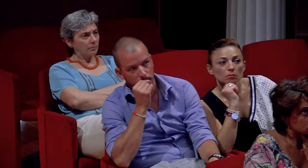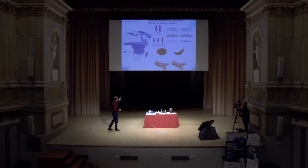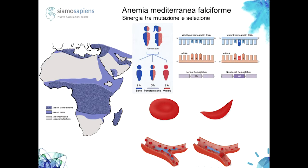Se un parassita entra nel globulo rosso e vuole replicarsi, la prima cosa che deve fare è mangiare. Se sono portatore sano di anemia, ho una chance di eliminare i globuli rossi infettati. E allora capite bene perché in quella mappa africana le due corrispondenze di colore fanno vedere che dove c'è malaria c'è un'alta incidenza di anemia mediterranea. Gli individui portatori sani hanno una più alta probabilità di liberarsi della malaria. È geniale questa cosa.